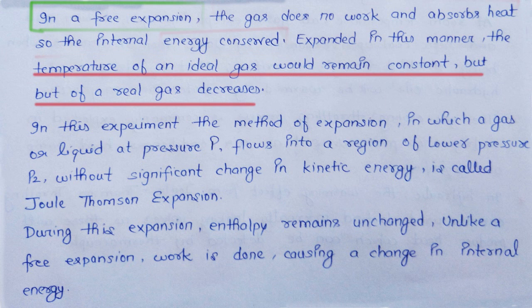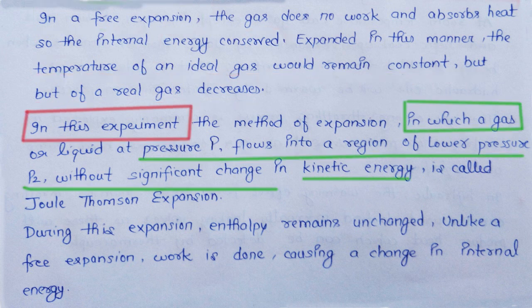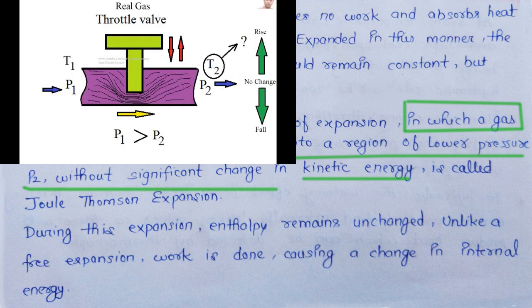Free expansion में ideal gas के लिए temperature change zero होता है। लेकिन अगर यही process real gas के साथ कराते हैं तो temperature में decrease आता है, जिसे हम इस experiment में समझेंगे। In the Joule-Thompson experiment, a gas or a liquid at pressure P1 flows into a region of lower pressure P2 without significant change in kinetic energy — this is called the Joule-Thompson experiment।